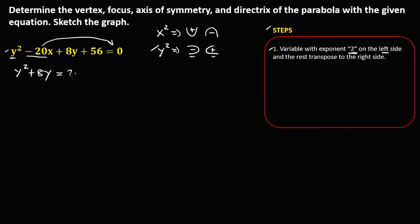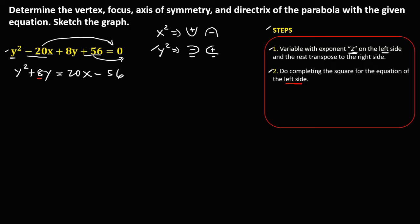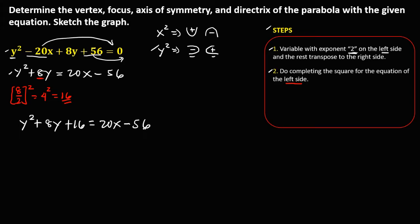The negative 20x becomes positive 20x, and the positive 56 becomes negative 56. Then do completing the square on the left side: take the coefficient 8, divide by 2 to get 4, then square it to get 16. Add 16 to the equation, giving y squared plus 8y plus 16 equals 20x minus 56 plus 16.